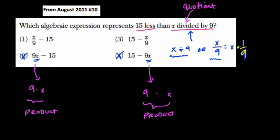Anyway, so which two do we have to choose from? Well, the first one here is x divided by 9 minus 15, and the second one is 15 minus x over 9. Now, they say 15 less than x divided by 9, and that tells me if you think,